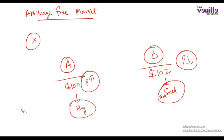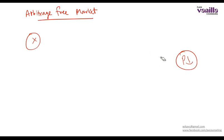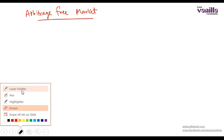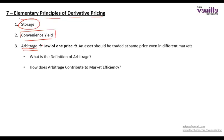Arbitrage transactions contribute to increasing market efficiency. If there are no arbitrage transactions or if they are restricted and regulators do not allow them, then these trades wouldn't happen and prices will remain different. Derivative pricing assumes as a key fundamental concept that arbitrage opportunities do not exist in the market and the market is arbitrage-free. In pricing models or valuation models, this will be the underlying assumption — that markets are arbitrage-free.